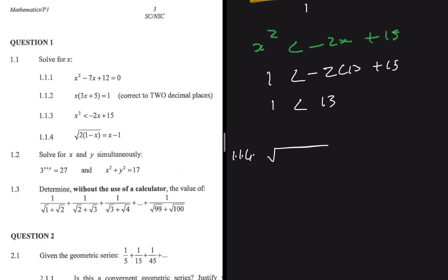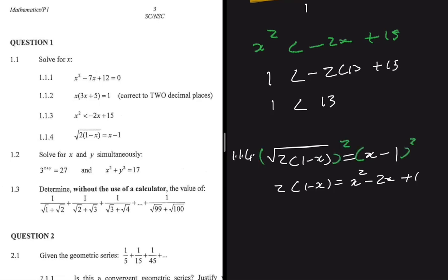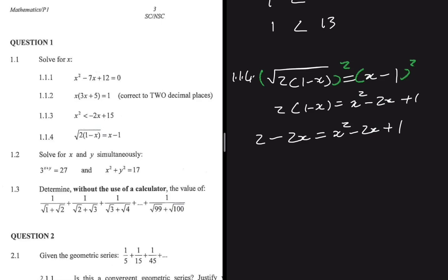For 1.1.4, we have the square root of 2 times 1 minus x equals x minus 1. We can square both sides to get rid of the square root, giving 2 times 1 minus x equals x squared minus 2x plus 1. Expanding the left hand side gives 2 minus 2x.